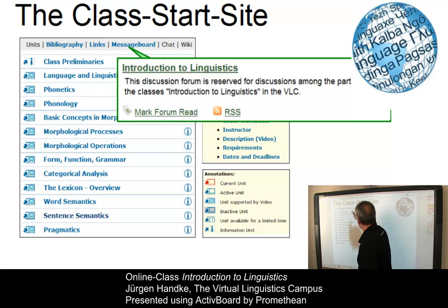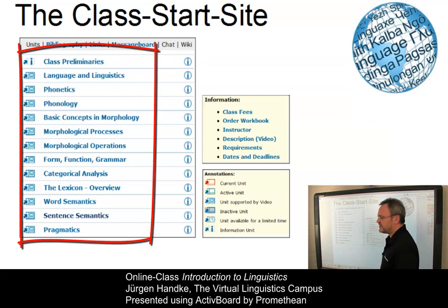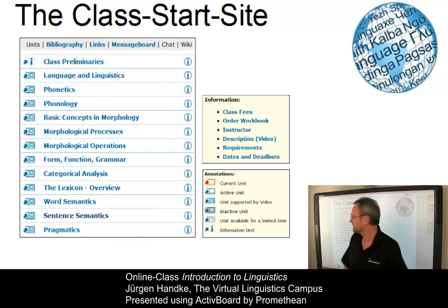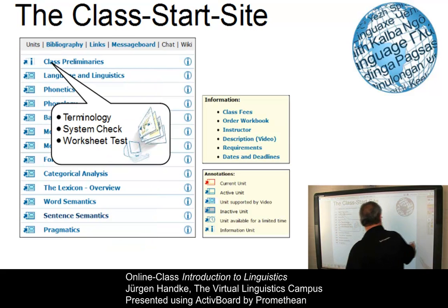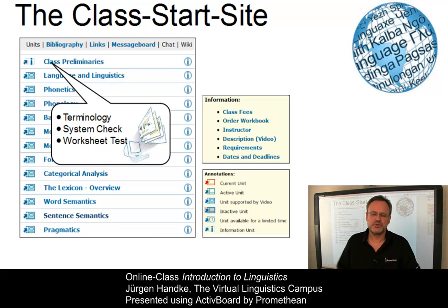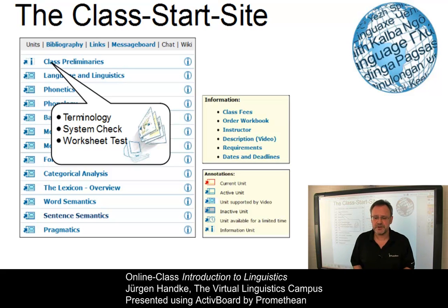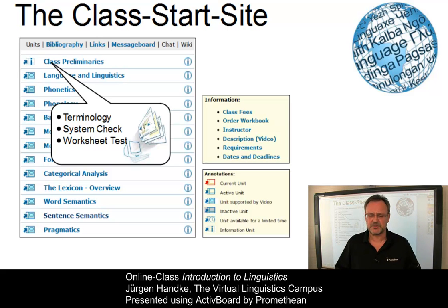The core of the class are the 13 units, where the first one, the class preliminaries, informs you about some general aspects of the class and makes some further suggestions about how to study online. Also, the most basic functions of the program are explained here.